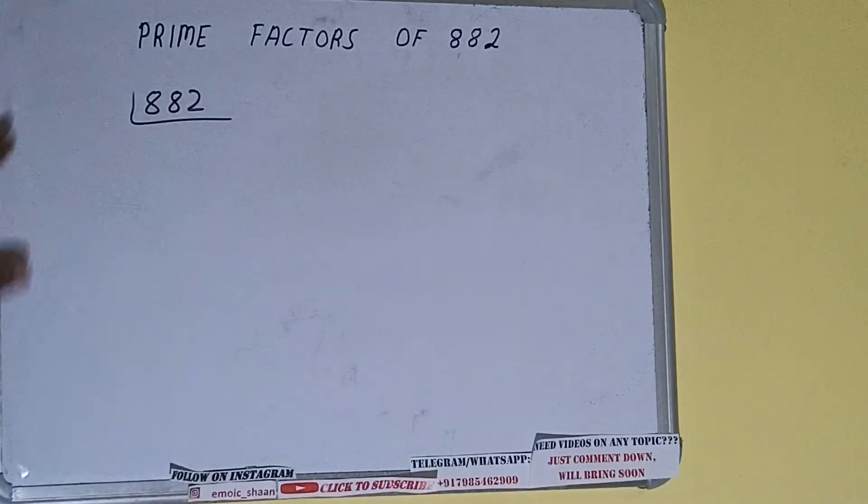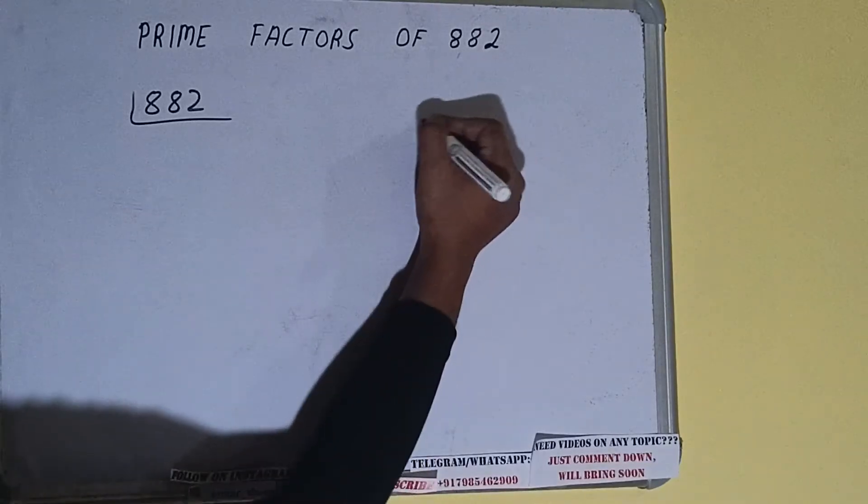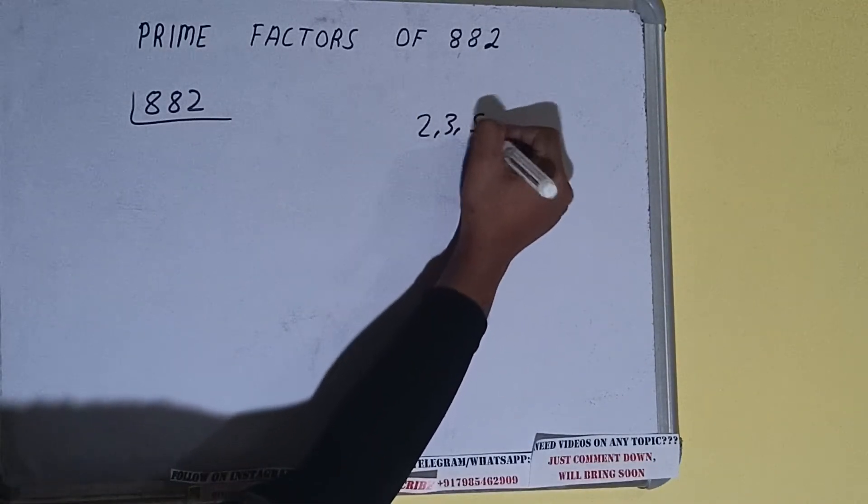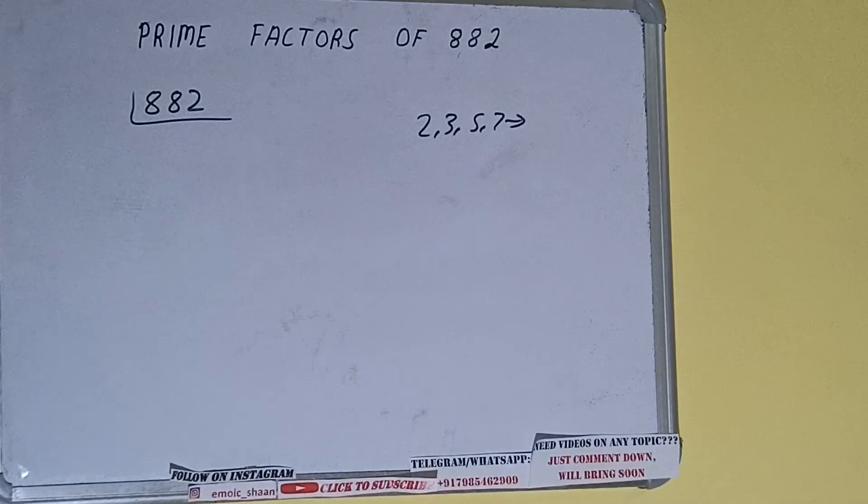The next thing we need to know about is what are prime numbers. Prime numbers are numbers that are divisible by 1 and the number itself, like 2, 3, 5, 7, and so on.